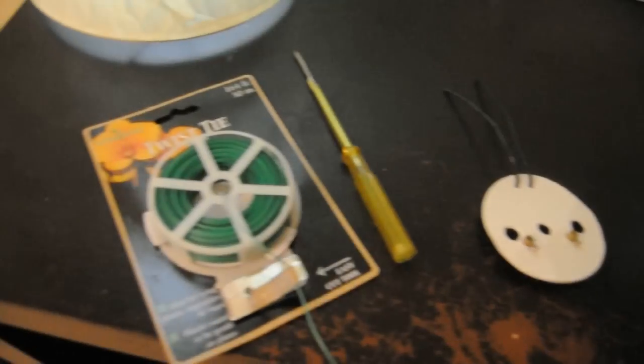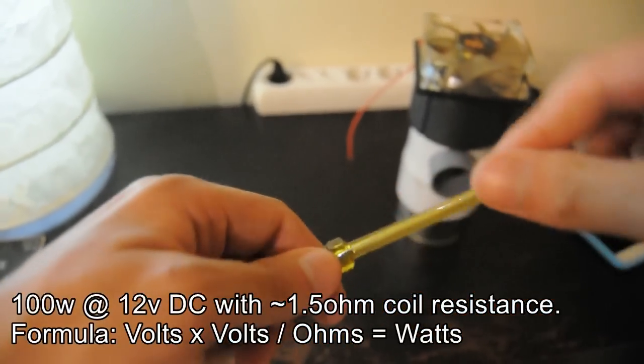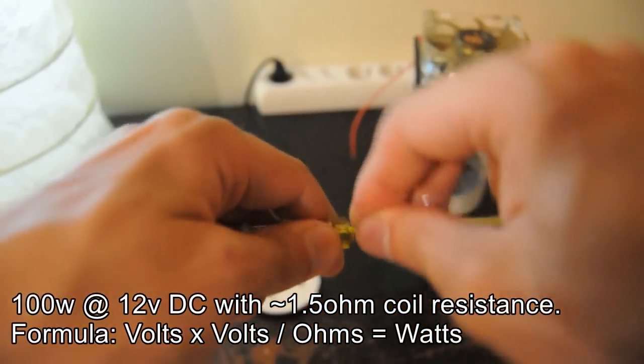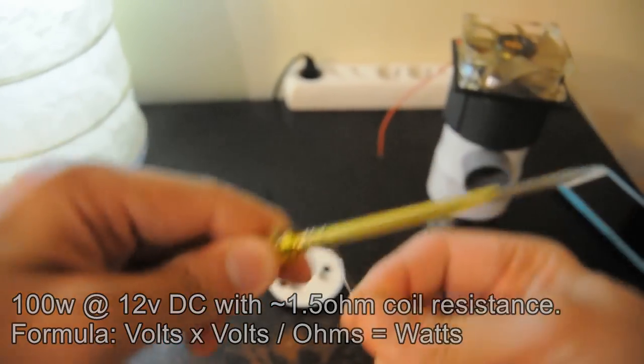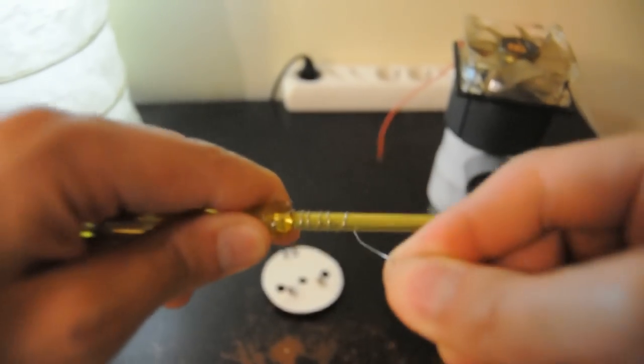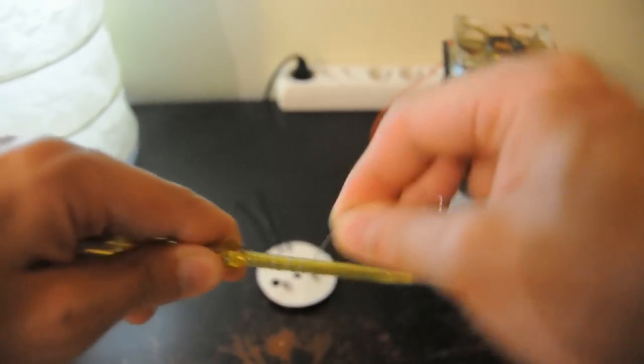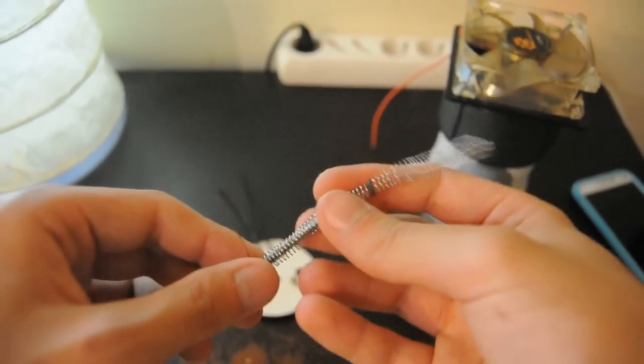Now we need to make the coil resistor. This device is going to work best at around 100 watts, so we need 1.5 ohms coil resistance. To find out how many watts is going to be, multiply the volts by volts, divide them by the ohms and this will give you the result.